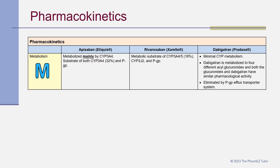Regarding metabolism: apixaban is metabolized mainly by CYP3A4 — it is a substrate of both CYP3A4 (32%) and PGP. Rivaroxaban is a metabolic substrate of CYP3A4 and CYP3A5 (~18%), CYP2J2, and PGP. Dabigatran has minimal CYP metabolism. It is metabolized to four different acyl glucuronides, and both the glucuronides and dabigatran have similar pharmacological activity. It is eliminated by the PGP efflux transporter system.